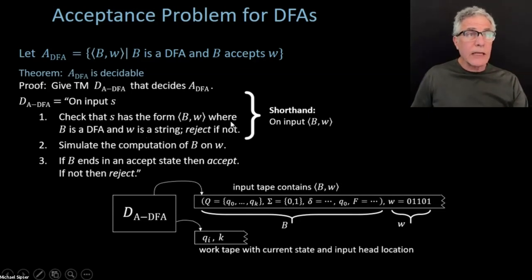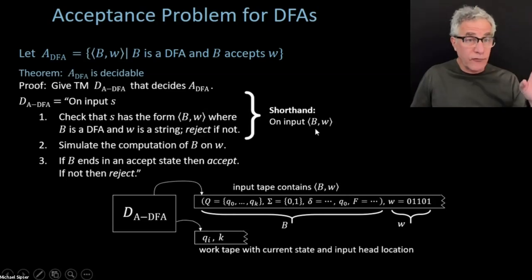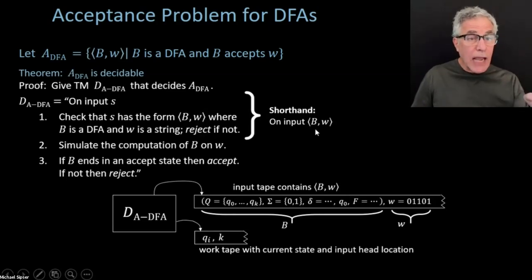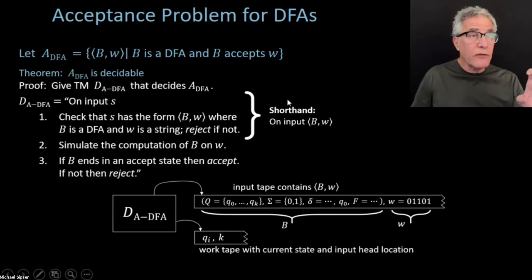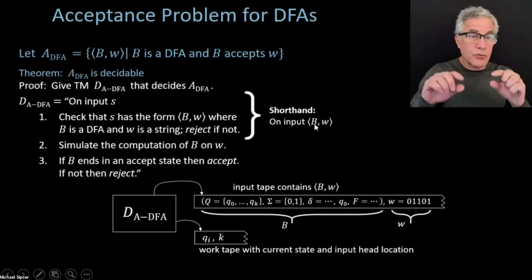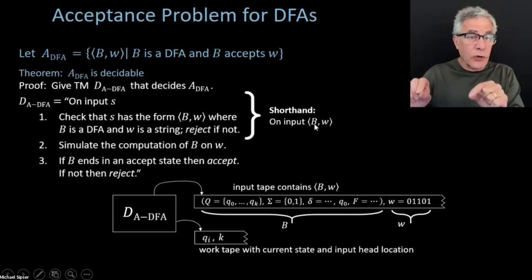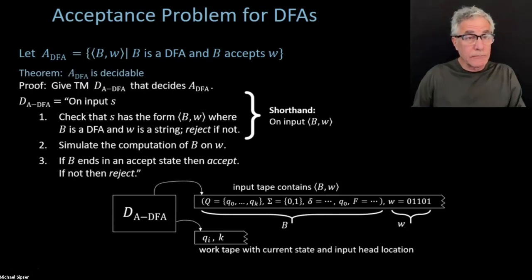For all subsequent Turing machines, my shorthand is: the input is of the form I'm looking for, which has built into it the check that the input string is of the right form, and we reject if it is not. All of our Turing machines are going to start with 'on input, the string is of a certain form' and then go on and do something with it.